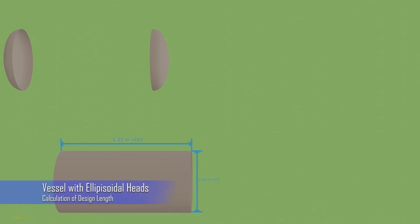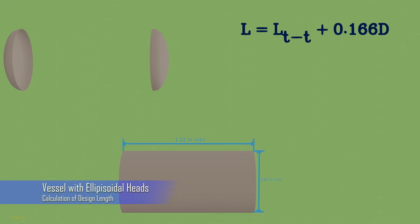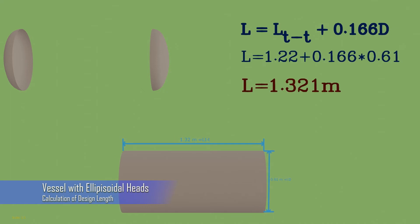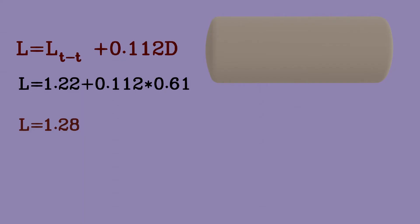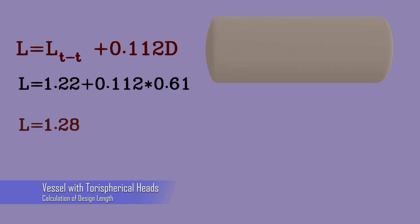For a vessel with an ellipsoidal head, the design length is L = Ltt + 0.166 D. Inserting the same values of Ltt and D gives L = 1.321 m. For a vessel with a torispherical head, the equation is L = Ltt + 0.112 D, which gives a design length of 1.28 m with the same corresponding diameter of 0.61 m.